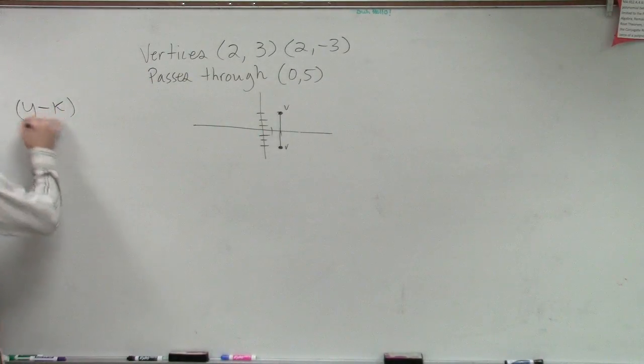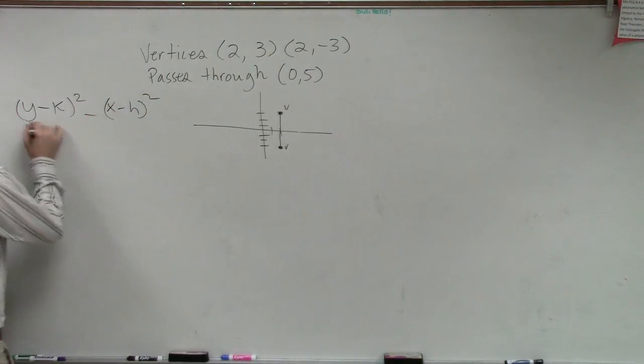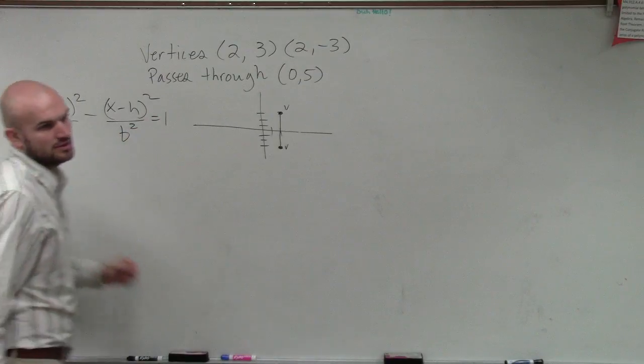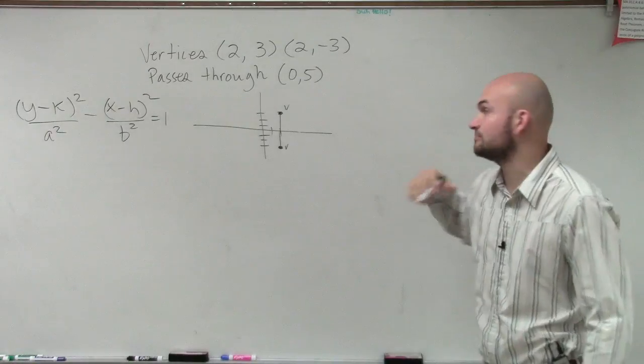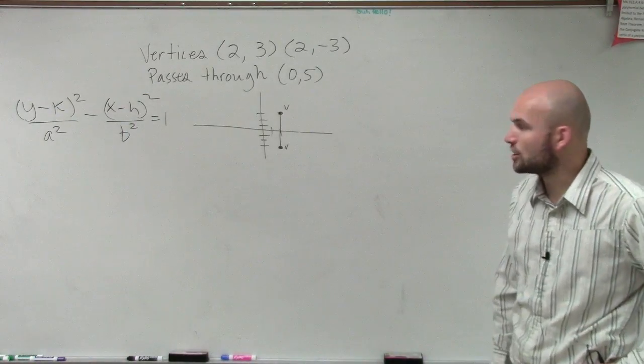Which is (y-k)²/a² - (x-h)²/b² = 1. So now we know all the information we need to figure out. We need to know what a is, we need to know what b is, and we need to know what our center is.